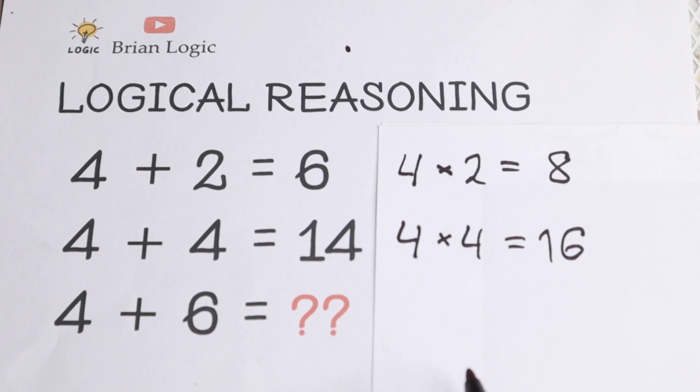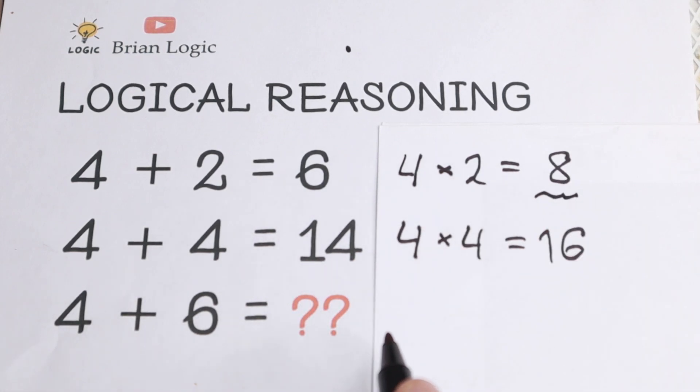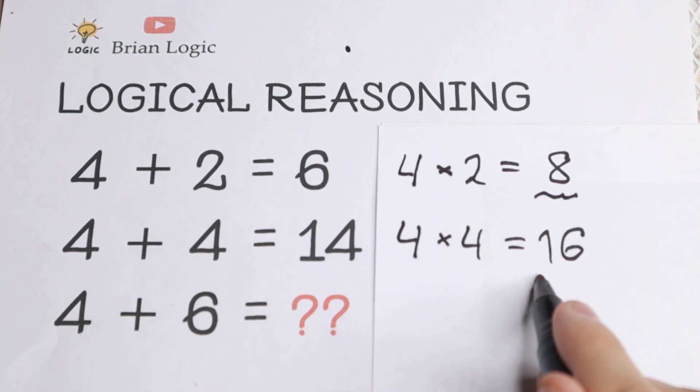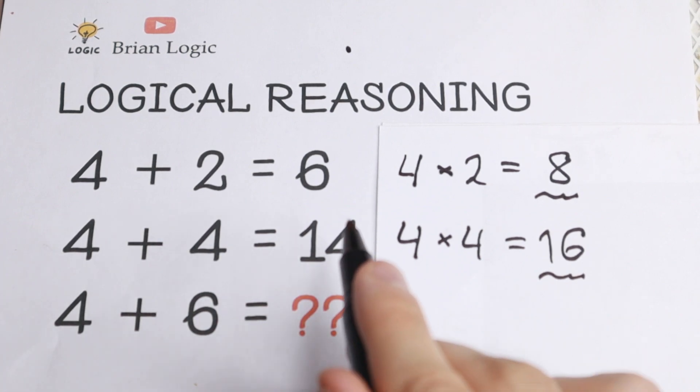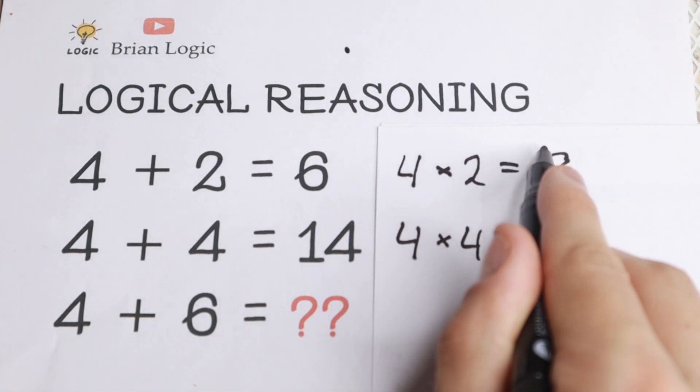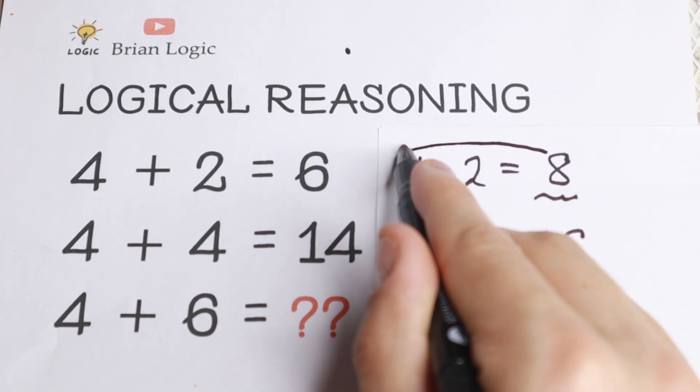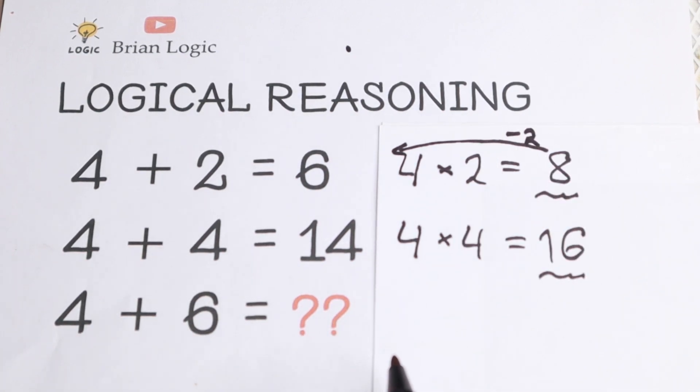But why I do this? Because if we look closely to our numbers, we have in the first line we have 6 and we have 8. In the second line we have 14 and we have 16. If we look closely and if we think a little bit we can see that there is a pattern between these numbers. Because right here we have 6, right here 8. What we do? We just need to subtract 2 from this 8. So subtract 2 and we will have our 6.